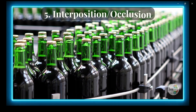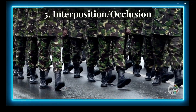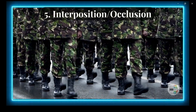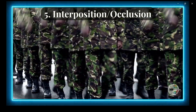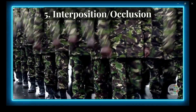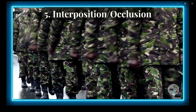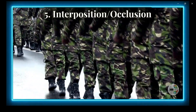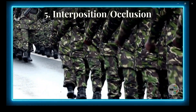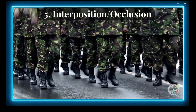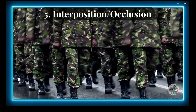Number 5: Interposition or Occlusion. If one object partly covers another, the one covering is likely closer. Imagine you are at a parade and one person stands in front of another — you know the person in front is closer because they block your view of the person behind.